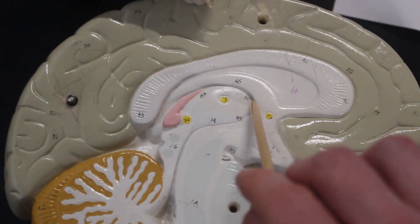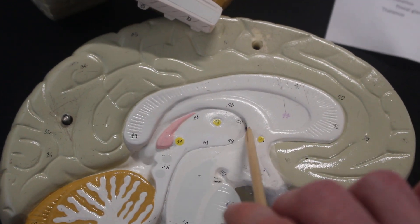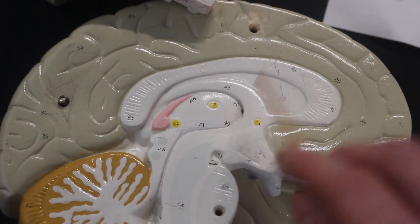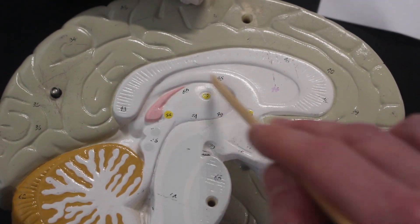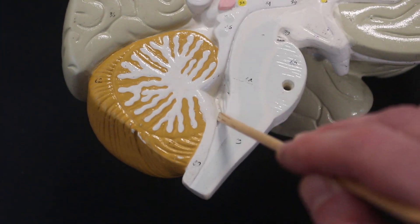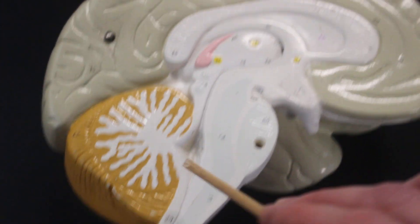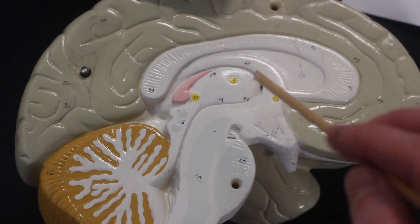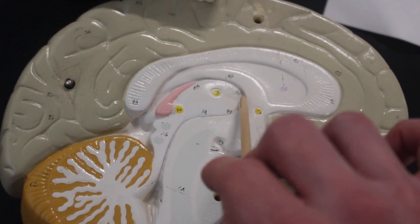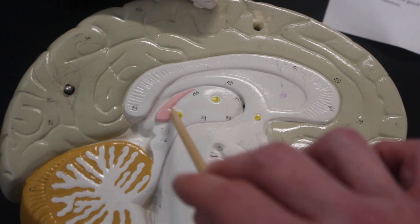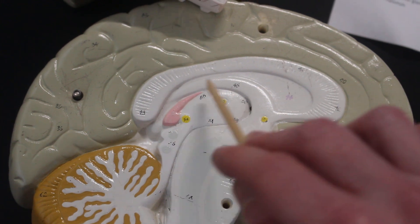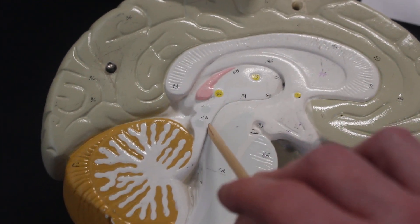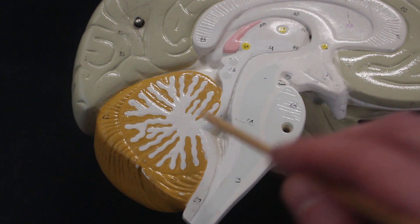There is the interventricular foramen, that little bitty hole here, that connects the lateral ventricles. And there's a right and left lateral ventricles to the third ventricle. Only one third ventricle connects via the aqueduct of the midbrain to the fourth ventricle, which then connects to the central canal of the spinal cord. So again, right or left lateral ventricles connect via the interventricular foramen to the third ventricle, which then leads by the aqueduct of the midbrain to the fourth ventricle.